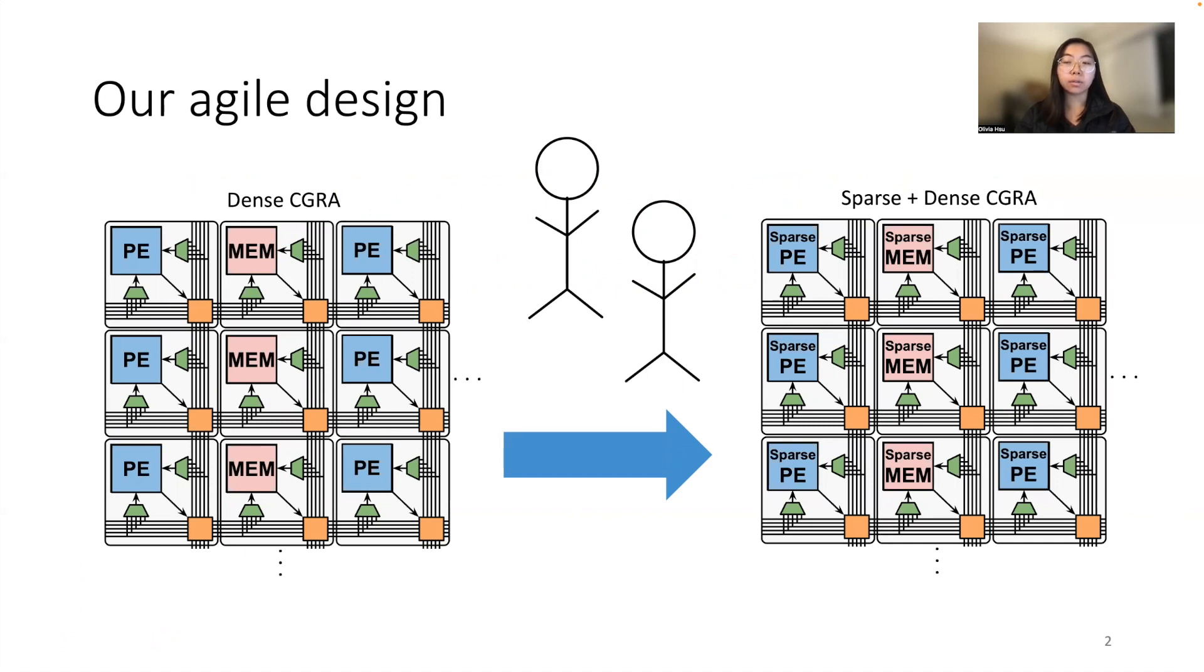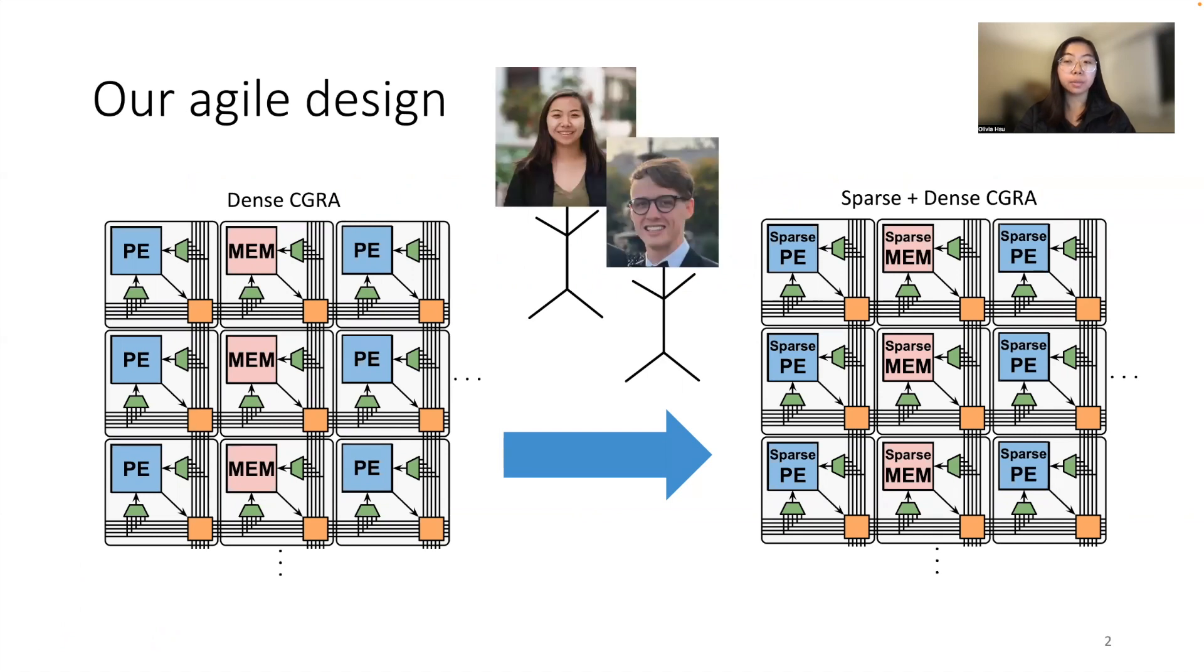We defined a sparse CGRA as a coarse grain reconfigurable array tailored for sparse applications. We were able to do this with just two people, here's me along with my co-author Max, in the span of about four months to tape out.